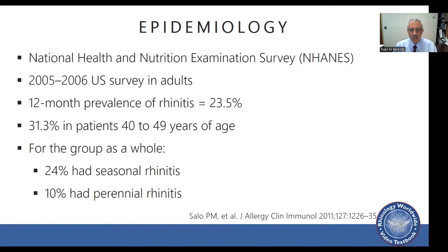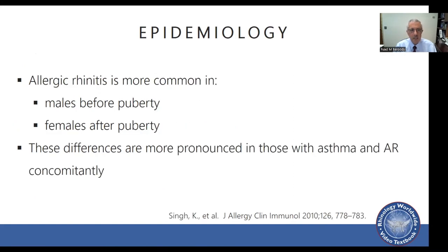Looking at the U.S. NHANES survey between 2005 and 2006, the 12-month prevalence of rhinitis was 23.5 percent. It was 31.3 percent in patients aged 40 to 49. For the group as a whole, 24 percent had seasonal rhinitis and about 10 percent had perennial rhinitis, so seasonal was the more prevalent presentation. Allergic rhinitis is more common in males before puberty and females after puberty, and these differences are more pronounced in those with concomitant asthma.